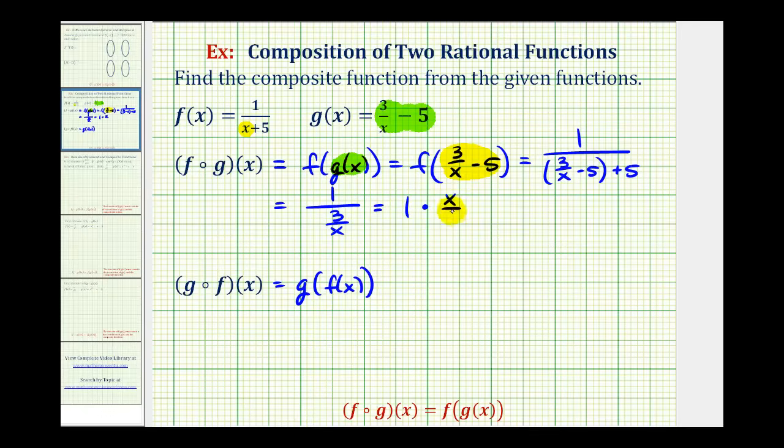This would be one times the reciprocal of three over x, which would be x over three, which of course is just x divided by three. So our composite function, f of g of x is equal to x divided by three.